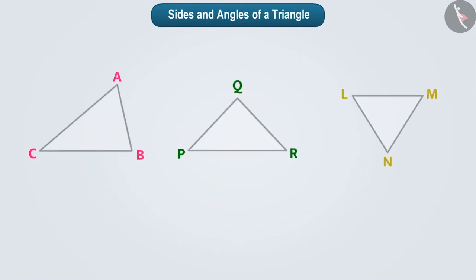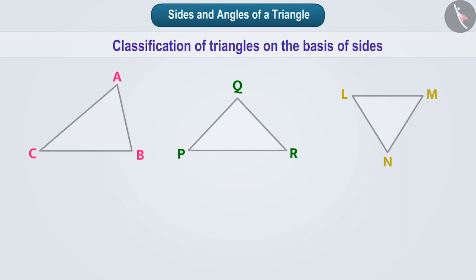We can make different types of triangles. We can classify them on the basis of sides and on the basis of angles. Let's classify triangles based on the sides. Look here. Triangle ABC has AB equal to 5 cm, BC equal to 6 cm and AC equal to 7 cm. A triangle whose 3 sides are not equal is called a scalene triangle.